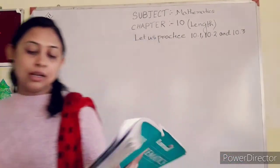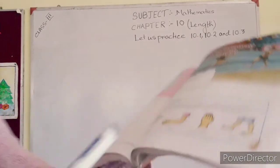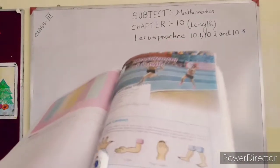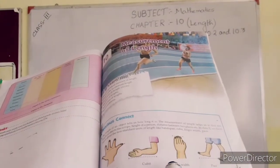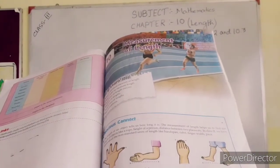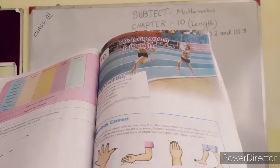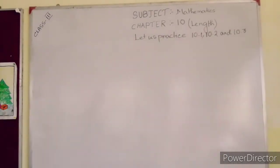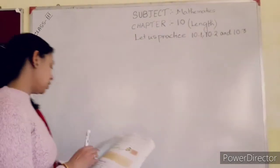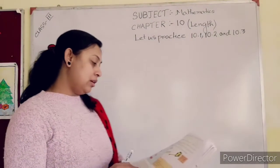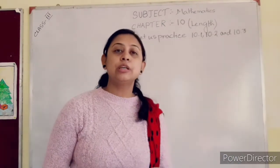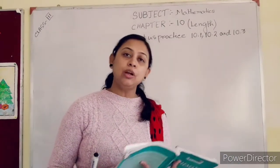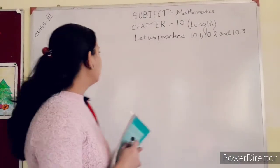In task 2 you have read about the hand span, cubit, finger width, face, and so on. Now in this chapter you have to read how to measure the length of an object.